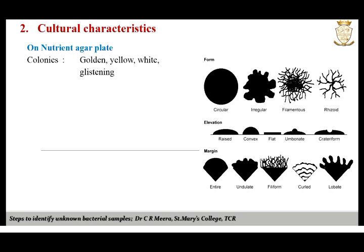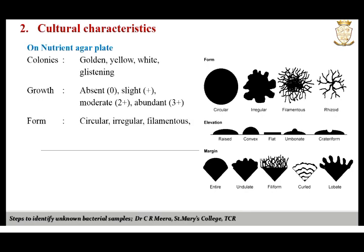Microorganisms produce discrete and well-defined colonies on nutrient agar plates, from which we can learn many characteristics. Some organisms produce pigmented colonies — golden yellow, white, or glistening. The growth pattern may also differ when incubated at normal body temperature of 37°C: some produce no growth, some slight growth, some moderate, and some abundant growth. The shape of the colony is also important in identification.